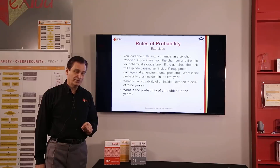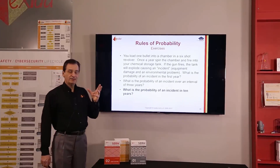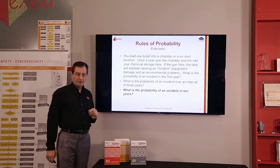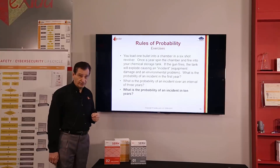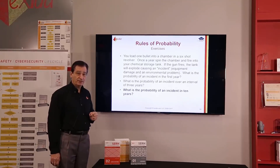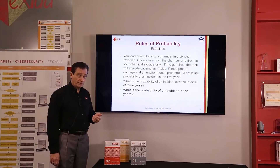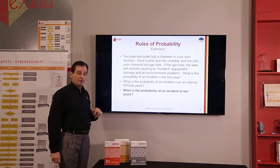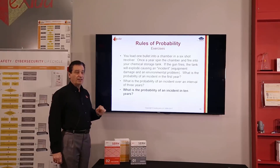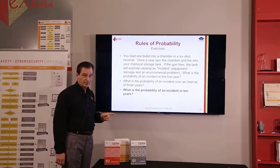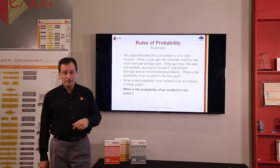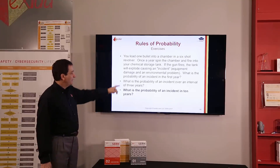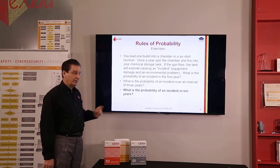Using our complement rule, if the probability of an incident in the first year is 1/6, the probability of not having an incident is 1 minus 1/6, which is 5/6. So we answer this by saying it's 1 minus [5/6 times 5/6 times 5/6], which gives a different answer from 1/6 times 1/6 times 1/6.